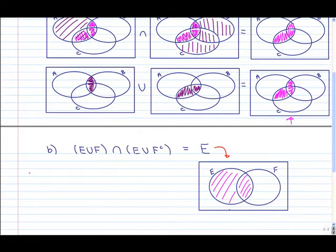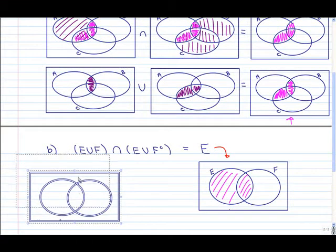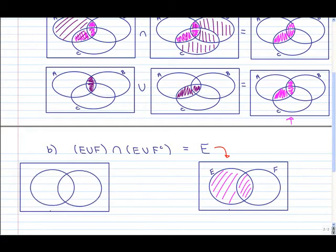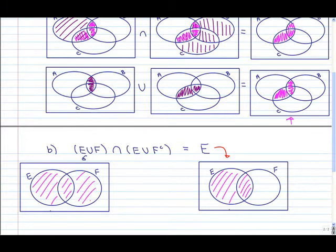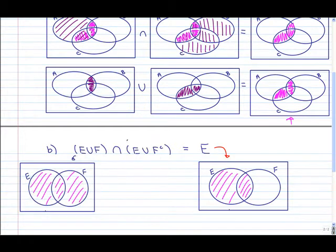We want to show that the left hand side Venn diagram will equal that. Starting with E union F: here's our Venn diagram with E and F labeled. E union F is what's in either E or F, so that gives us the entire E circle and the entire F circle shaded.